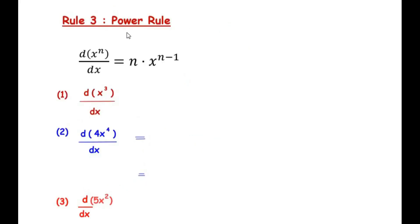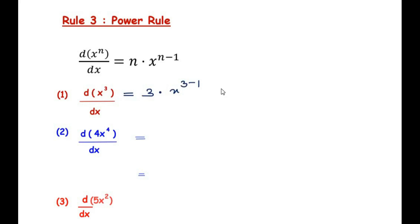The third rule is the power rule. The formula is: d/dx of x^n = n·x^(n−1). The power comes out and multiplies with x, while the power of x reduces by 1. For example, differentiating x³: using the power rule, 3 comes out and multiplies with x, and the power reduces to 3−1=2, giving 3x².